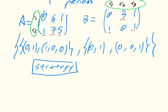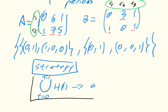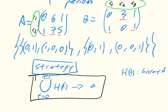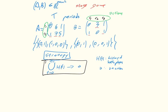To formalize this, a strategy is a map from the entire history of the game — the union of histories H(t) for all repetitions up to t minus one — to an action. H(t) is the history of both players, and A is an action.